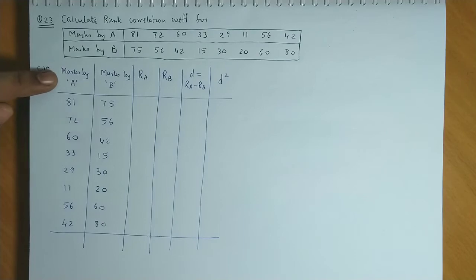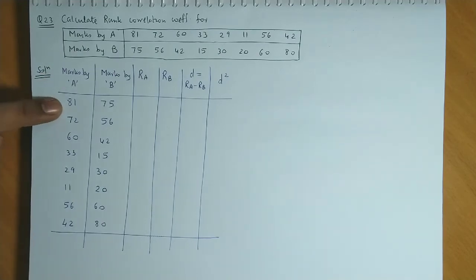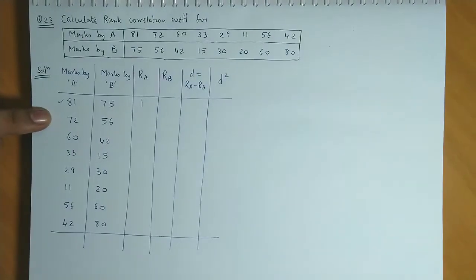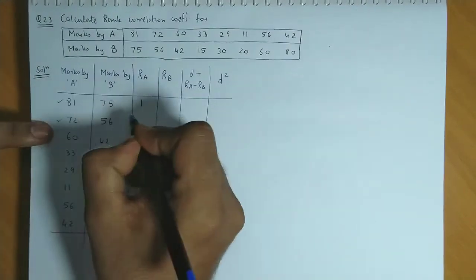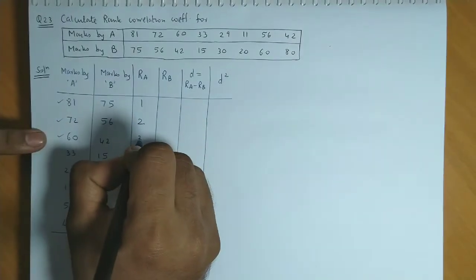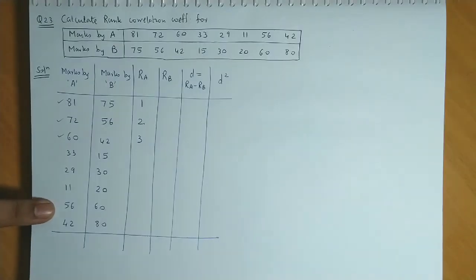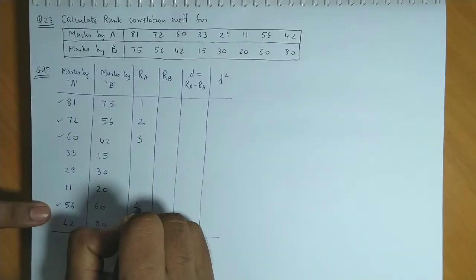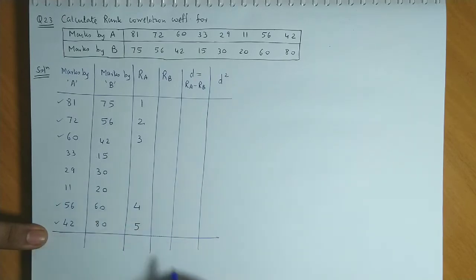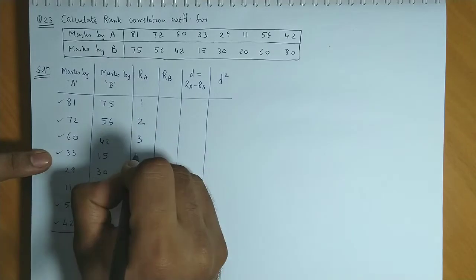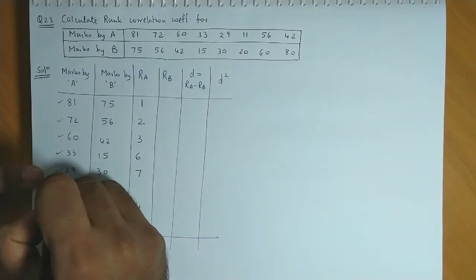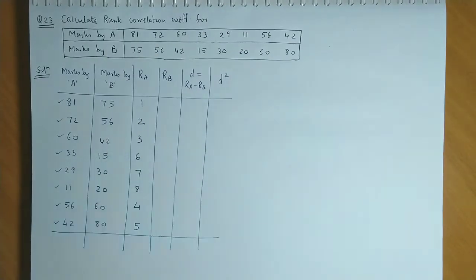First, marks by A ranking. For 81, first rank. Next 72, second rank. 60, third rank. Next 56, this would be fourth rank. 48, this would be fifth rank. 33, rank 6. Then 29, rank 7. And 11, that is rank number 8.